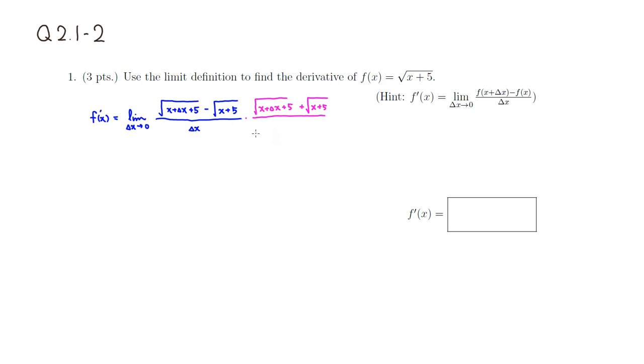Then we put exactly the same thing: square root of x + Δx + 5 plus square root of x + 5. Then if you multiply out,